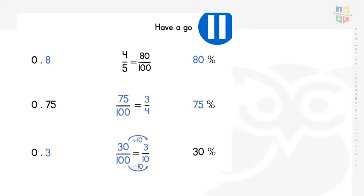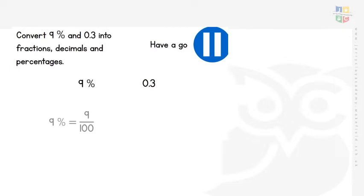For the second one, 0.75 as a decimal becomes 75 over 100 as a fraction. We should know that's three quarters, or we can use the common factor of 25 to simplify. That's also 75%. For the bottom one, 30% becomes 30 hundredths — 0.3 — and the fraction next to 30 over 100 is also written as three tenths. Hopefully you recognise that's just the most simplified version of the fraction.